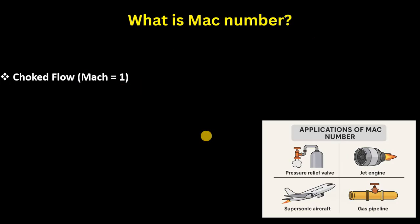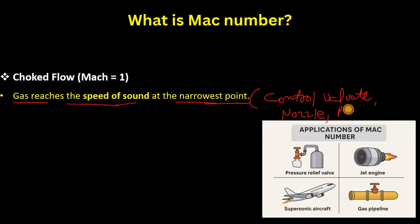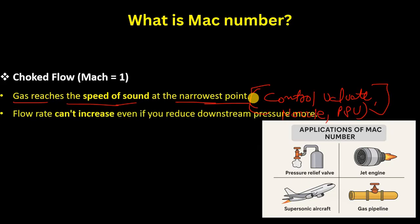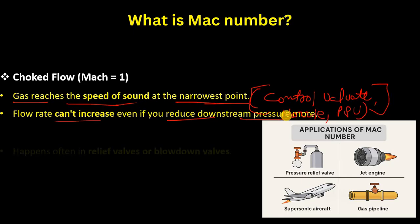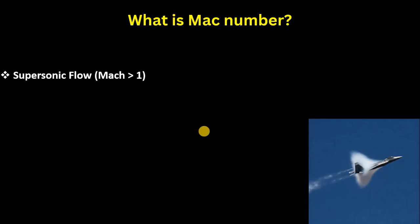When your Mach number is equal to one, choked flow occurs. The gas reaches the speed of sound at the narrowest point — such as a control valve or PSV nozzle. In that case, your flow rate cannot increase even if you reduce the downstream pressure further. This happens often in relief valves or blowdown valves.